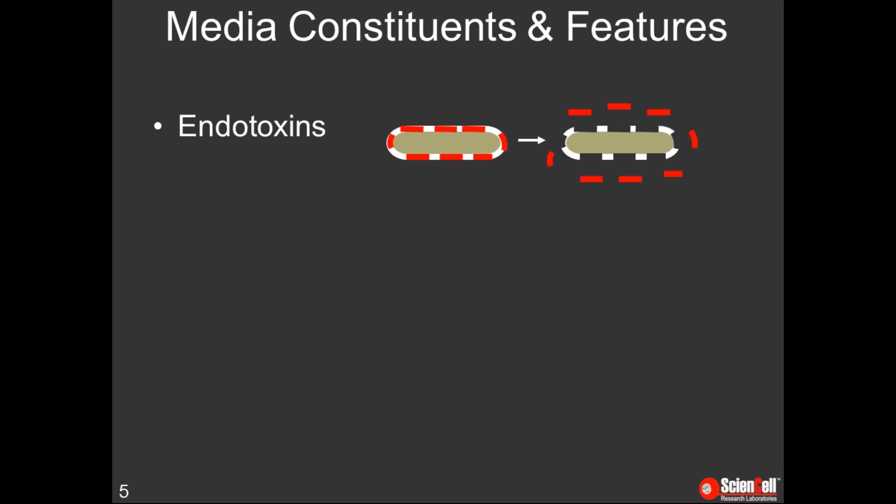In addition to media composition, there are some other factors to consider when evaluating the quality of your culture media. One of these is endotoxin levels. Endotoxins are lipopolysaccharides in the cell membrane of gram-negative bacteria and are shed during intense bacterial growth or upon lysing. Different cells have different sensitivities to endotoxins, but primary cells are especially sensitive. ScienCell uses ultra-purified water for all of our cell culture media and reagents, and we perform testing to ensure low endotoxin levels. We also only use serum with very low endotoxin levels and test all serum lots with our primary cells.